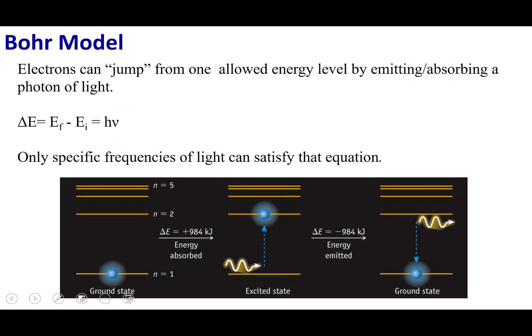Let's talk about excitation and relaxation. The energy levels go from n equals 1 (ground state) up through n equals 5. If I have an electron in its ground state and I give it energy, this process is called absorption. The electron will move from the ground state to a higher orbital and go into the excited state. I have to give it enough energy to make this jump — if I don't, it falls right back to the ground state.